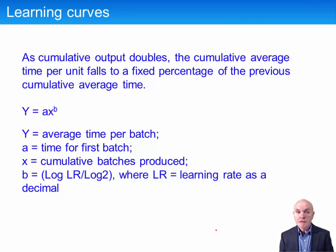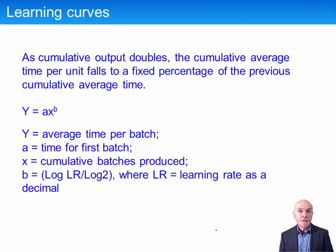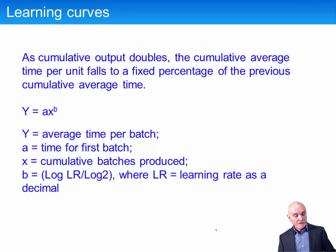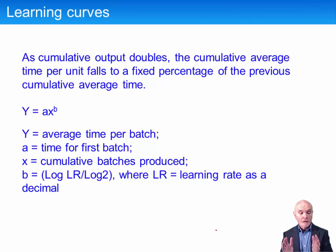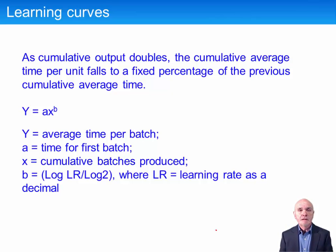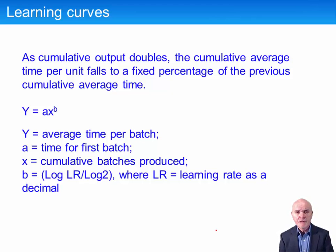Chapter 4 looks at learning curves. Learning curve theory attempts to capture what we intuitively know to be true: that as a procedure is practiced more, the workforce will get more efficient and faster at performing it. This is important for performance management because if this improvement is not taken into account and you keep a relatively long time budgeted for production, a high cost will be assumed, which may give you a high selling price — meaning you're trying to set a non-competitive price and performance suffers.